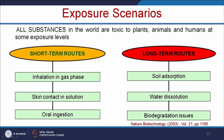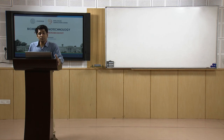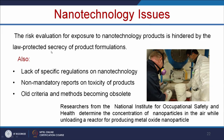Let us see the various exposure scenarios. All substances in the world are toxic to plants, animals, and humans at some exposure level. There are two routes: short-term routes — mainly inhalation, gas phase, skin absorption, and oral ingestion — and long-term routes — mainly soil adsorption, water dissolution, and biodegradation issues. Risk evaluation for exposure to nanotechnology products is hindered by product secrecy of formulation, lack of specific regulations on nanotechnology, non-mandated reports on toxicity, and the continued use of old criteria and methods that have become obsolete.